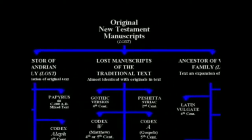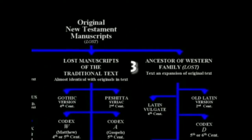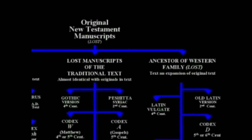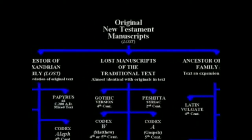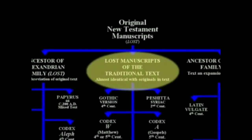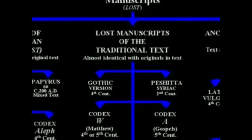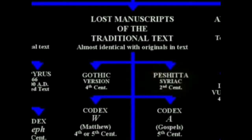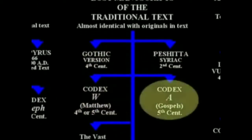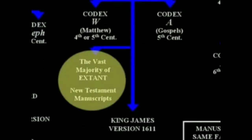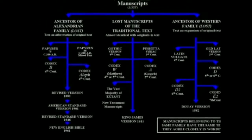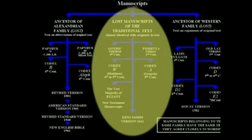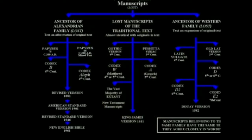The ones at the base — in other words the oldest ones — are all lost manuscripts, so they are all copies of previous manuscripts. As far as the Bible that led to the King James Version in the English language, they come from the central tree. These are lost manuscripts of the traditional text. They come basically from the Syriac, from the Gothic versions. There's a Codex W and a Codex A, and then there is a vast majority of extant texts which make up the New Testament manuscripts — about 1,900 manuscripts in this central block — from which eventually we have the King James Version and every other Bible except the Roman Catholic and the Jesuit Bible.